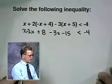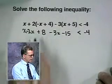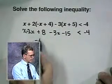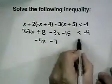Let's combine some terms now. x minus 2x minus 3x equals negative 4x, and 8 minus 15 equals negative 7.